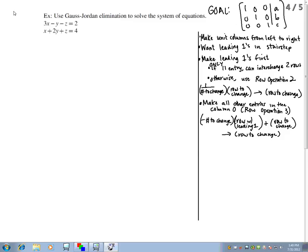We're going to use Gauss-Jordan elimination to solve this system of equations. We have 3x minus y minus z equals 2, x plus 2y plus z equals 4.